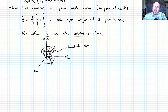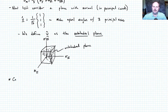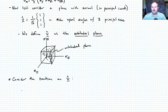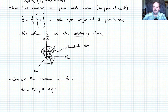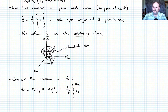Now let's consider the traction on the octahedral plane. From the Cauchy stress formula, the traction T_i equals sigma_ij * nu-hat_j. In principal coordinates, with nu-hat = (1/√3)(1,1,1), this gives T = (1/√3)(sigma 1, sigma 2, sigma 3). Nothing too special yet.